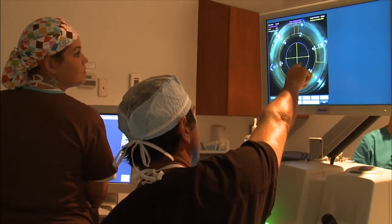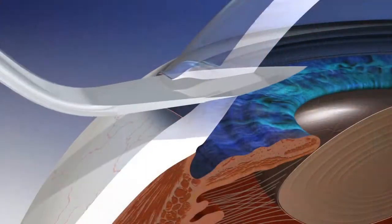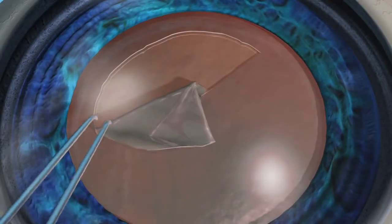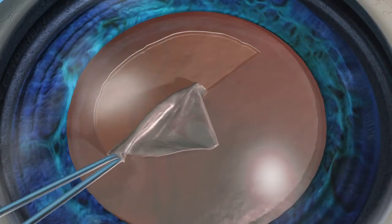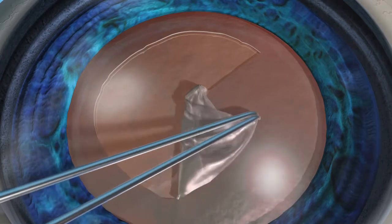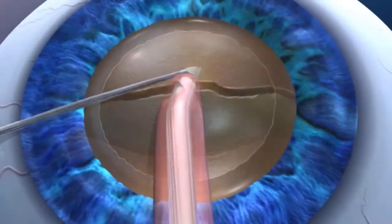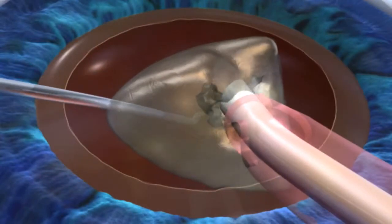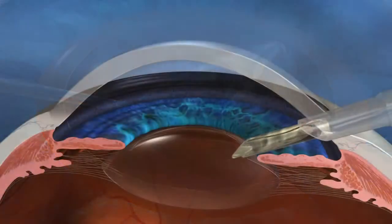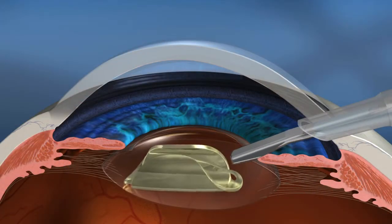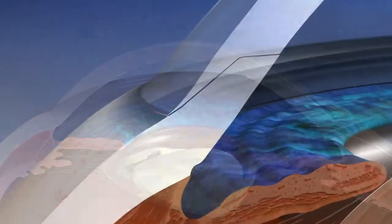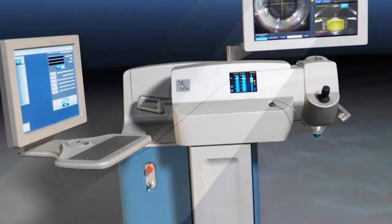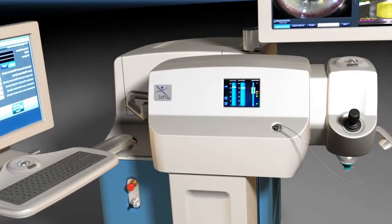Cataract surgery involves corneal incisions, capsular excision, a circular hole in the capsular bag, lens fragmentation, phacoemulsification, intraocular lens insertion, and incision closure. The LensX laser can assist with some of the most challenging steps.